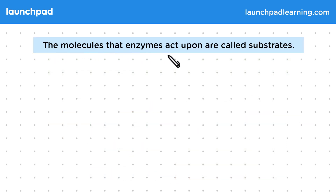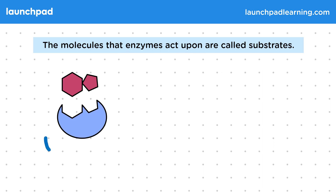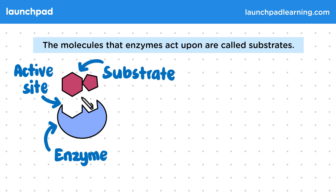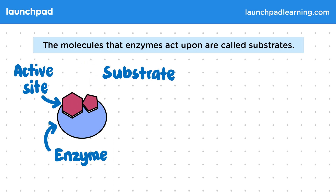The molecules that enzymes act upon are called substrates. The blue part of this simple diagram represents an enzyme. This part of the enzyme is important — it's called the active site. Floating just above the active site, you can see these red shapes which represent the substrate. You'll notice that this part of the substrate is the same shape as the active site on the enzyme. They're complementary to each other.